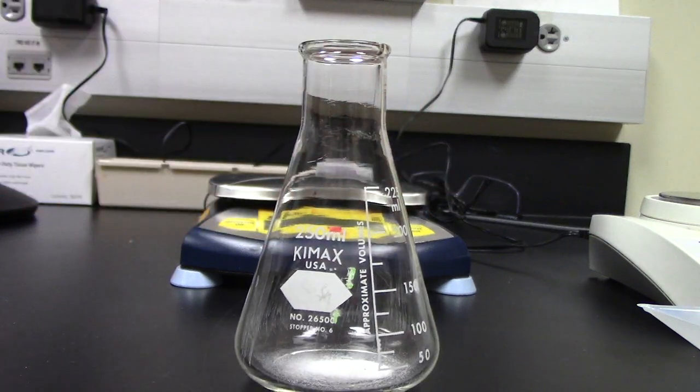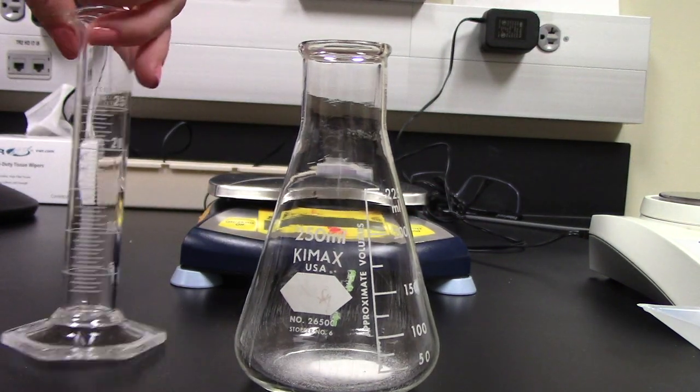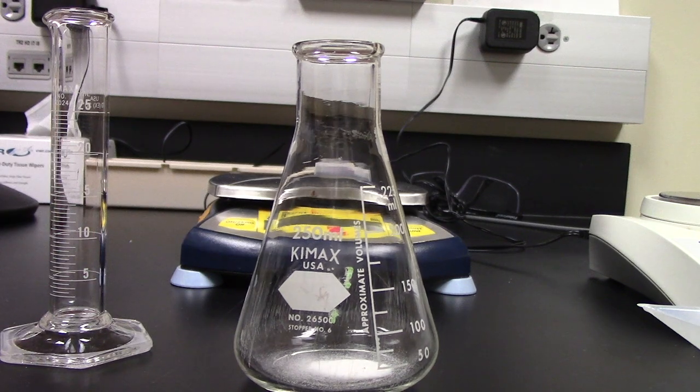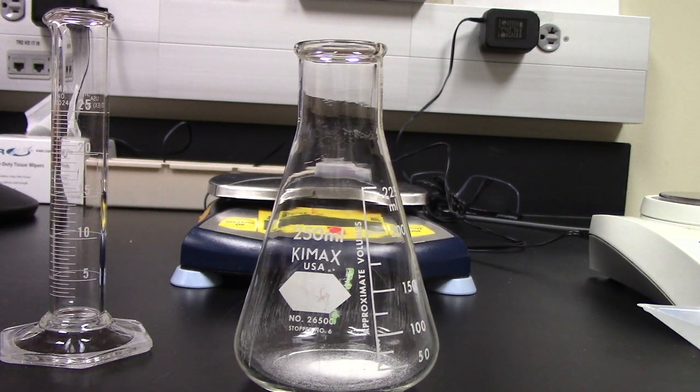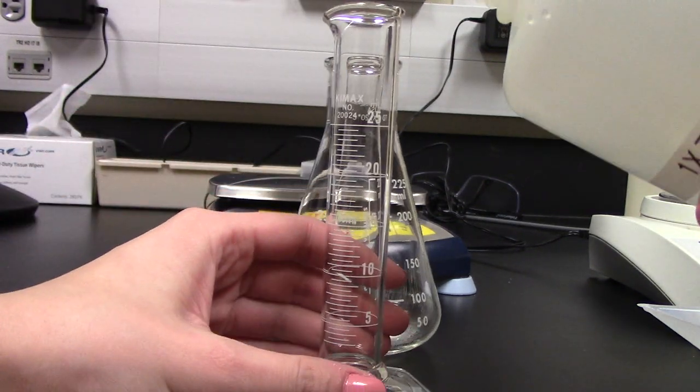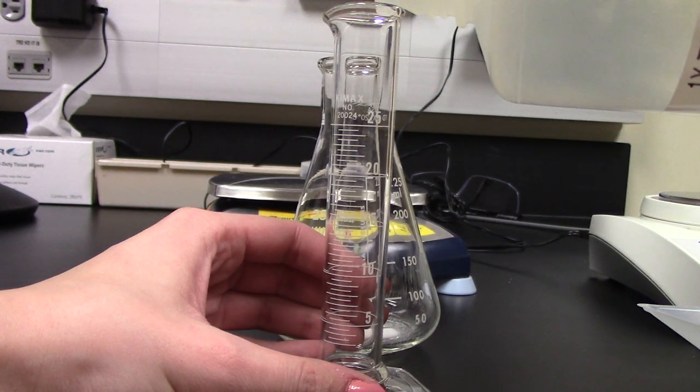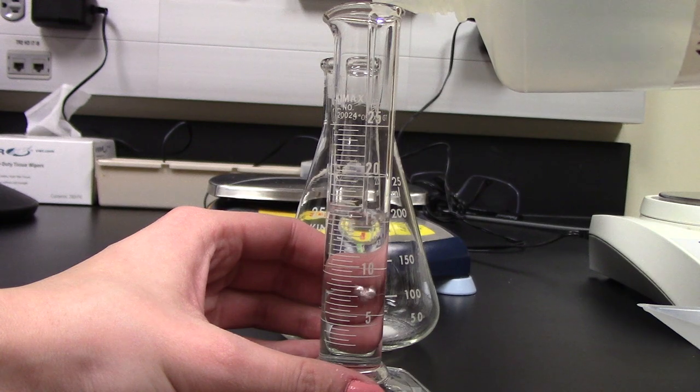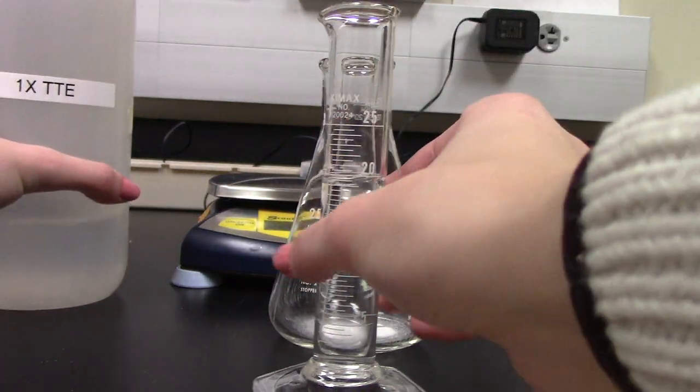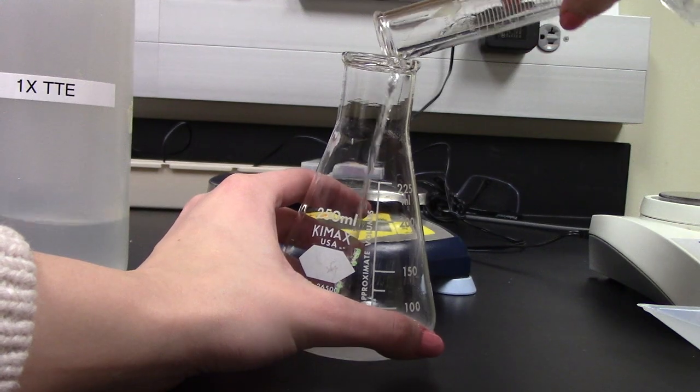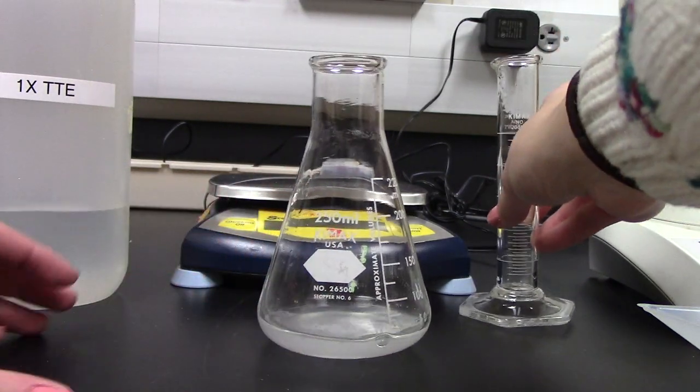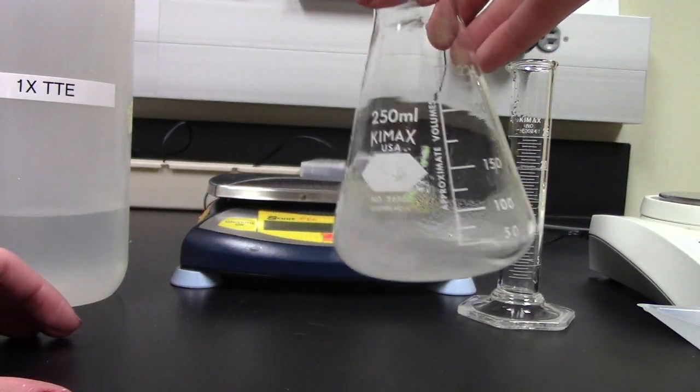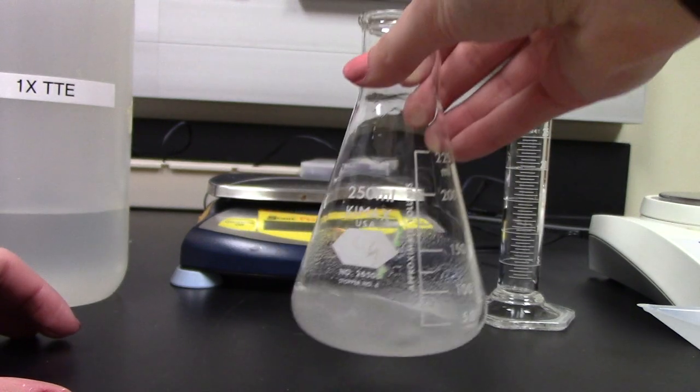I am also then going to want to measure out 20 milliliters of 1x TBE. I will do that now and then I'm going to add it into my agarose and swirl to mix.